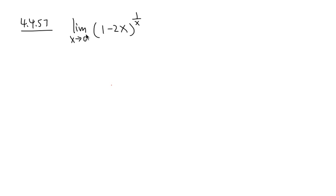Problem 4.4 number 57: we are going to calculate the limit when x is approaching 0 of 1 minus 2x raised to the 1 over x power.